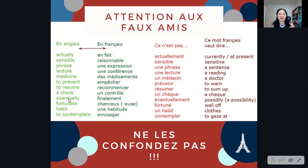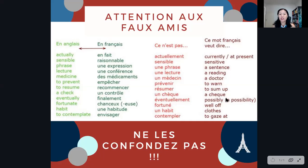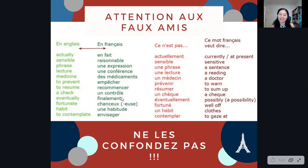When students want to say 'eventually,' they'll often use 'éventuellement.' But 'éventuellement' means 'possibly' — there's a possibility of something happening. If you do mean 'eventually,' you need to use 'finalement.' For example: He eventually moved out — Finalement, il a déménagé.